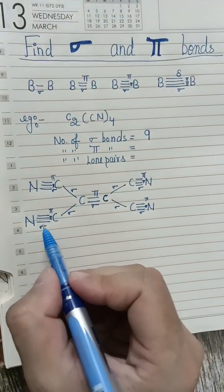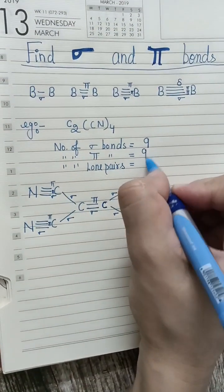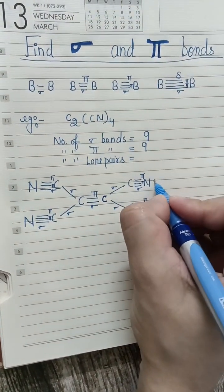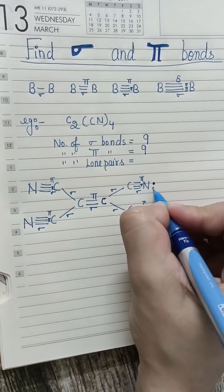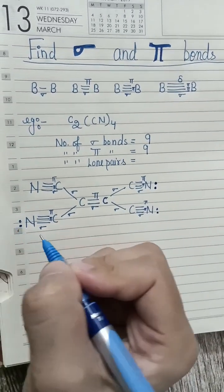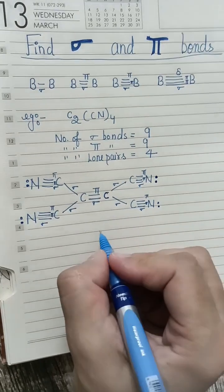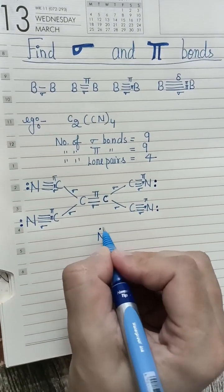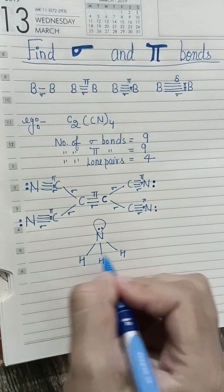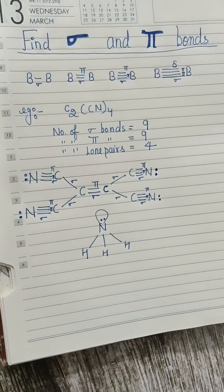Now, how many Pi bonds? One, two, three, four, five — so there are five Pi bonds present. And how will you calculate lone pairs? We know nitrogen forms three bonds and has one lone pair, like in ammonia. There are four nitrogen atoms present, and therefore four lone pairs present in this molecule. You can compare this CN group with ammonia — one lone pair and three bonds — to easily calculate the lone pairs.